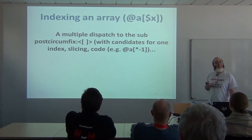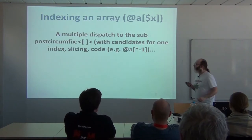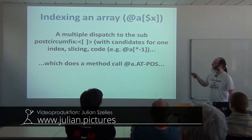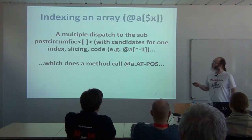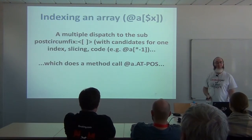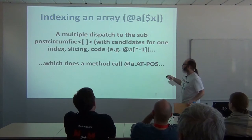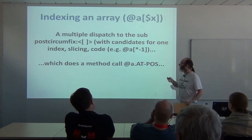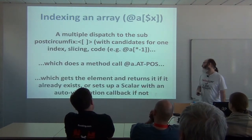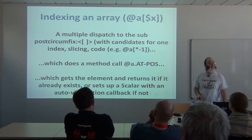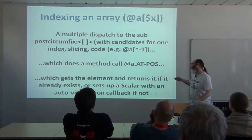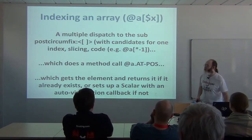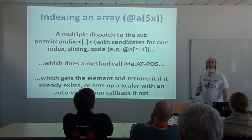What does array indexing do? It actually calls the `at_pos` method on the object being indexed into. `at_pos` receives individual indexes, so all of the slicing is factored out into the operator. That means if you're implementing a custom array type, you only have to implement `at_pos`, which is pretty nice. It finally does what you'd expect an array indexing operation to do — look up the element, return it — and we also have to handle auto-vivification if the element doesn't exist yet.